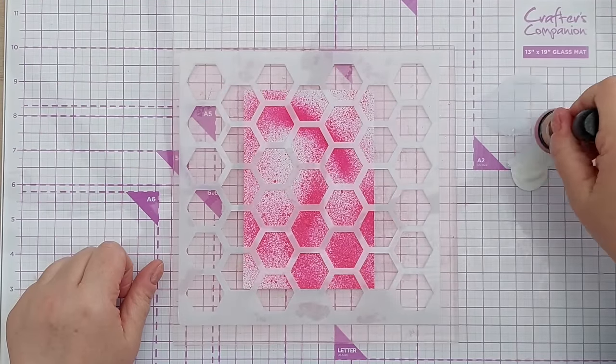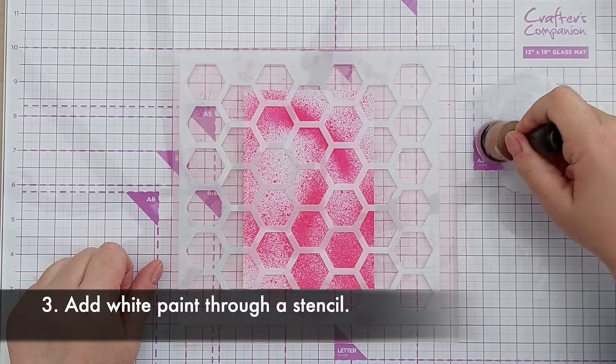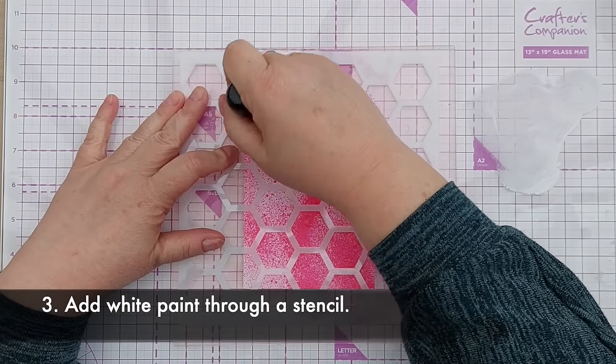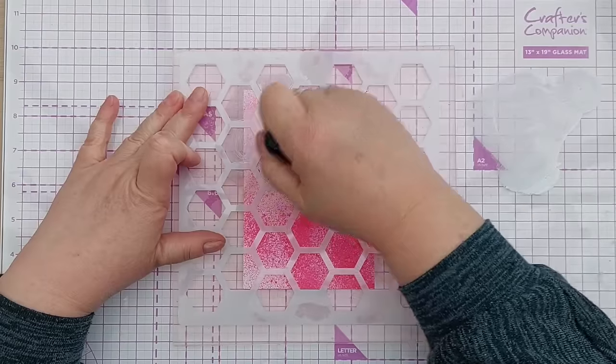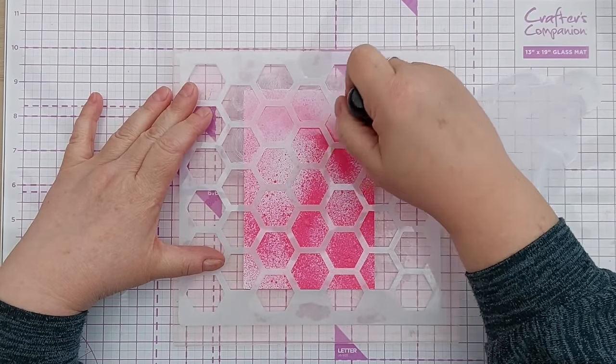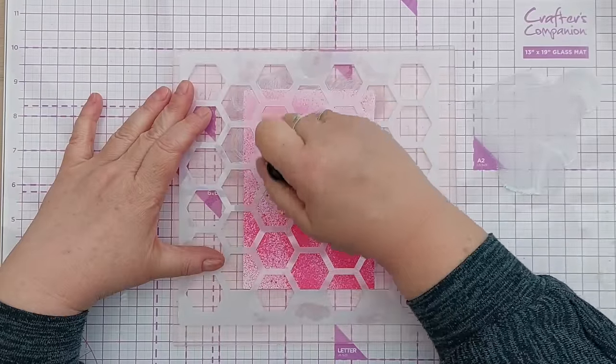On to technique number three and that is to add white paint through a stencil. White paint will have a similar effect to vellum, it will mute or tone down whatever you put it over.